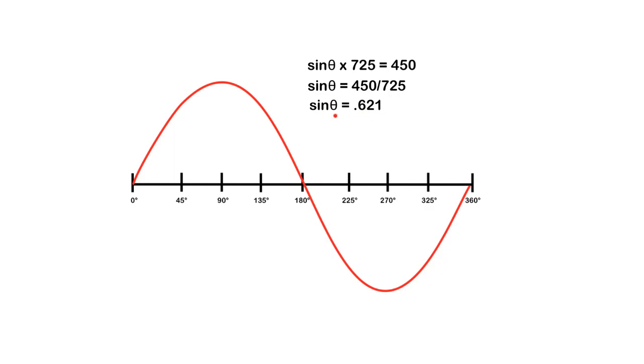Now we need to get this theta alone. We're going to inverse sine this side. Then we're going to also inverse sine that side. Whatever you do to one side of the equation, you do to the other. We end up with an angle of 38.4 degrees, meaning that when this sine wave has 450 volts on it, it is at 38.4 degrees into its cycle. So that's our angle number one, is 38.4 degrees.